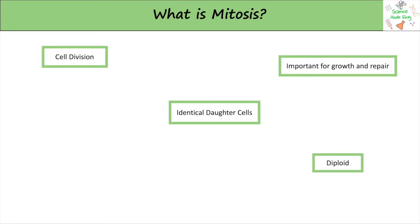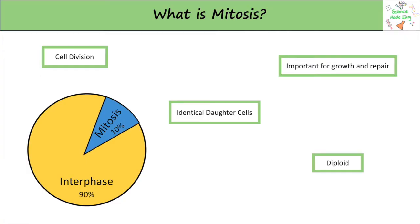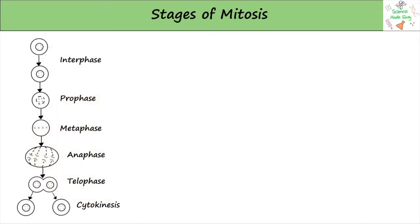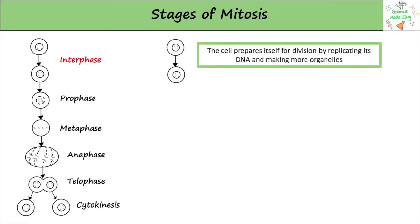There are lots of different stages of mitosis. Cells only spend around 10% of their time actually dividing. Before mitosis even starts, interphase needs to happen. This is when the cell copies all of its DNA ready to put into the new cell. It also needs to make more organelles, such as mitochondria and ribosomes.